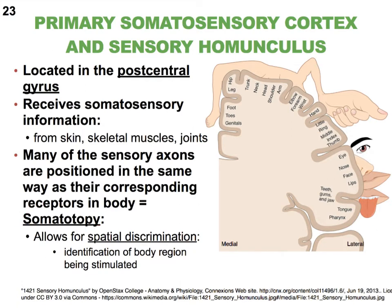Let's analyze the word somatotopy: soma means body, and topy relates to topography — we're making a topographical map of the body. This nice layout in the brain creates an image that almost looks like a human being when we map it. Good job — topography, exactly right.